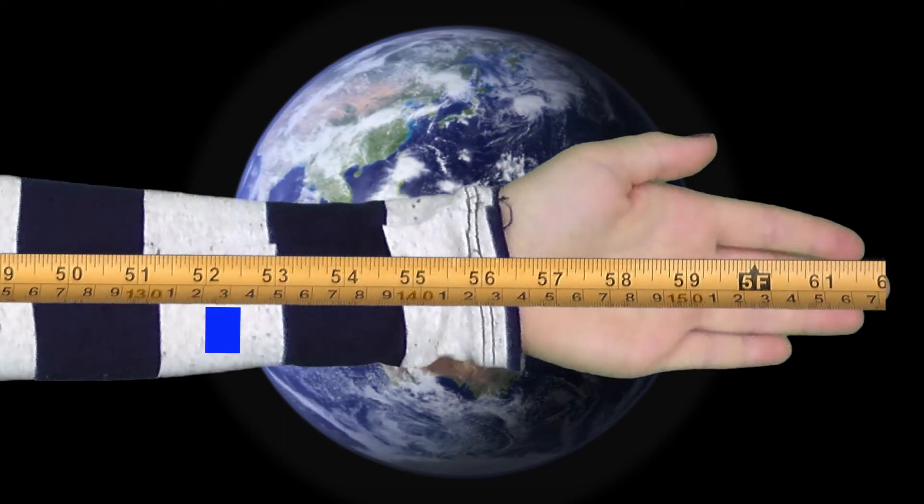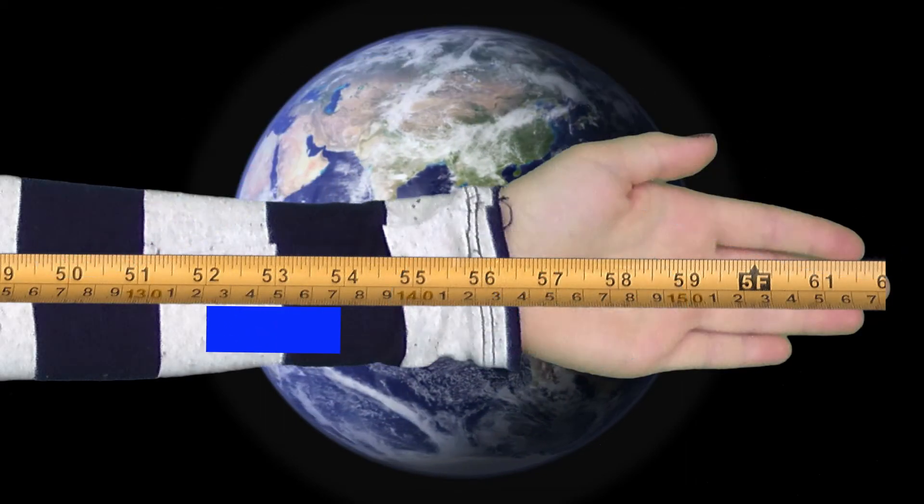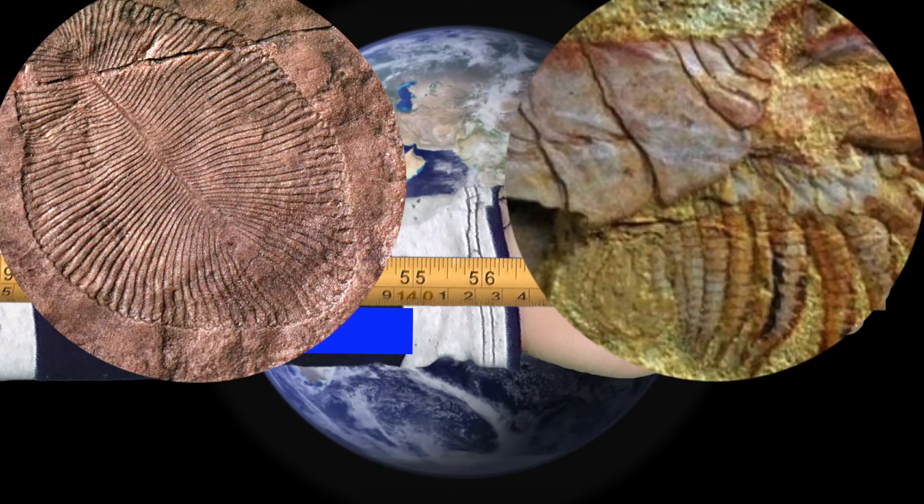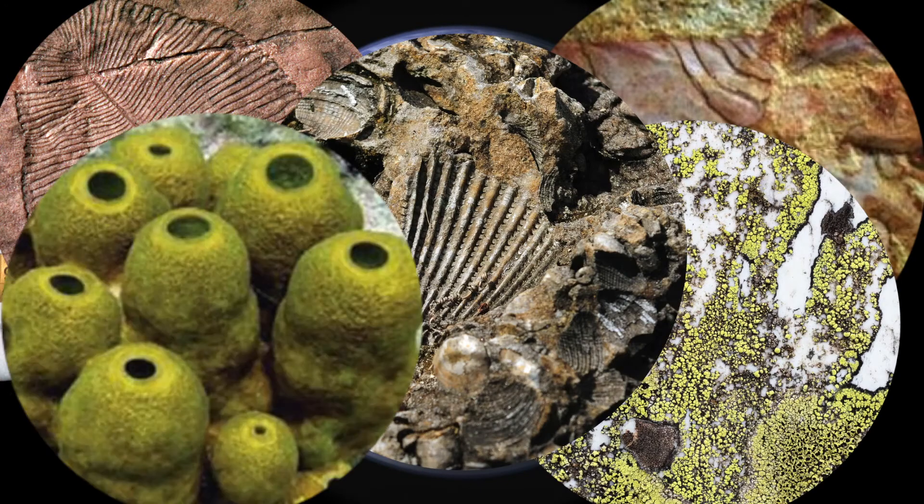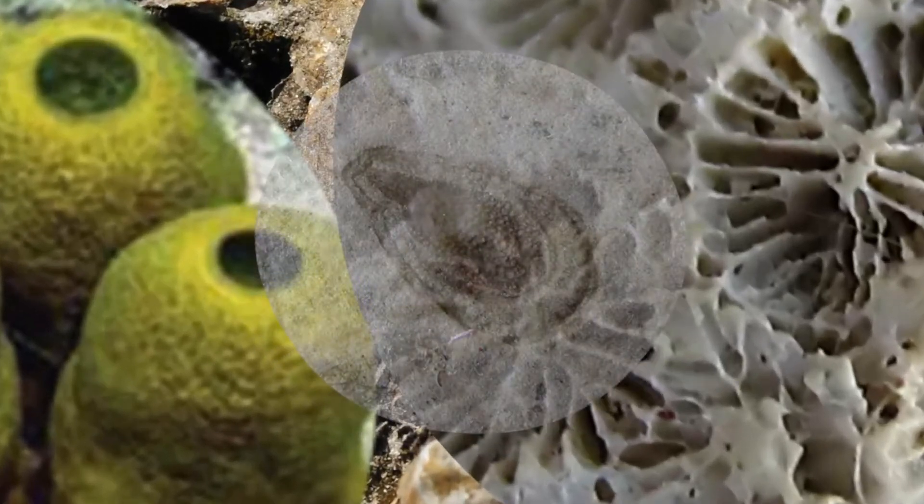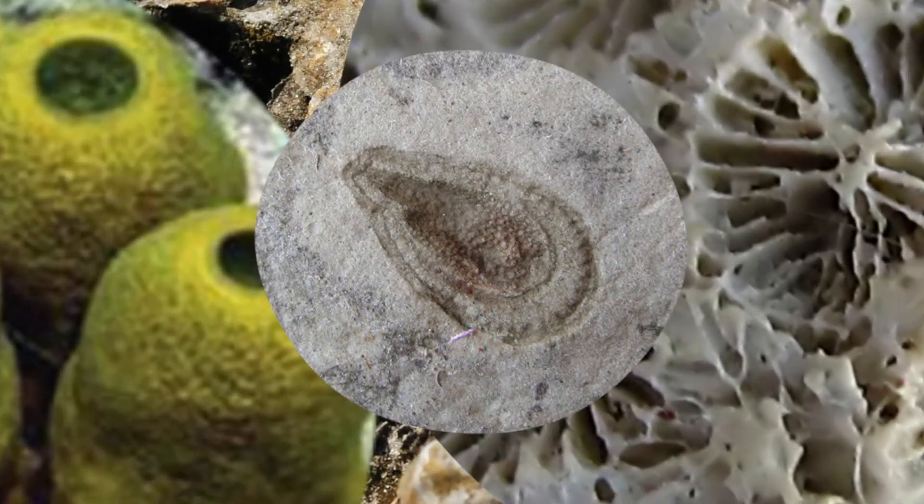An inch later, we see protozoans and worms. Two inches further on, the first true arthropods, fungi, mollusks, sponges, and corals form.